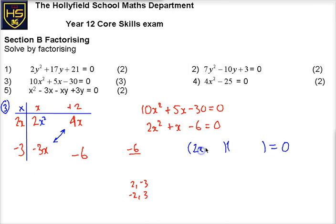I've now got 2x minus 3 and I've got x plus 2 here in my brackets. So either 2x minus 3 is equal to 0 or x plus 2 is equal to 0. Add 3 divided by 2, x is equal to 3 over 2. Or x is equal to minus 2. And they're my solutions.